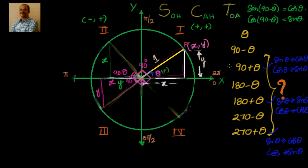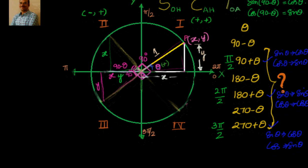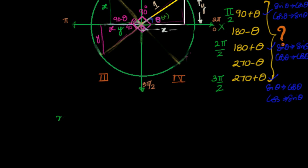We can generalize this. Notice that 90 is π/2 and 270 is 3π/2, whereas 180 is 2π/2. So I can generalize by saying that for n·π/2 plus or minus theta of any trigonometric ratio — let's say sine and cosine — if n·π/2 plus or minus theta, how will they change?